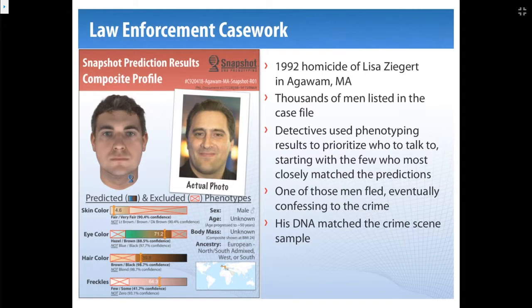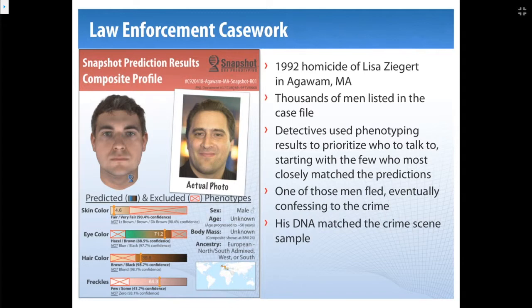Just a couple of case studies for how law enforcement uses this. First, a 1992 homicide of a young woman in Massachusetts — detectives were reopening the case around 2016. Over those decades, thousands of people had been noted in the case file, most not excluded using DNA. They used the DNA phenotyping results to prioritize who to talk to — there were maybe five guys who closely matched our predictions. They knocked on one man's door; he wasn't home, but they told his roommate to let Gary know they'd like to speak with him. When Gary heard that, he fled. Eventually the cops tracked him down and matched his DNA to that crime scene sample. He confessed, and after 25 years they finally closed the homicide case.